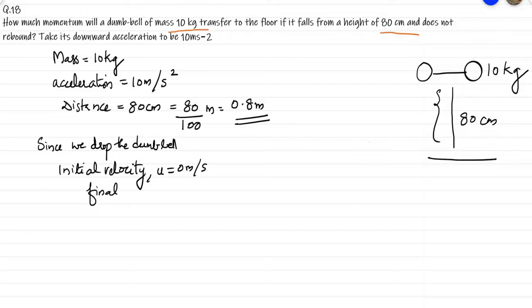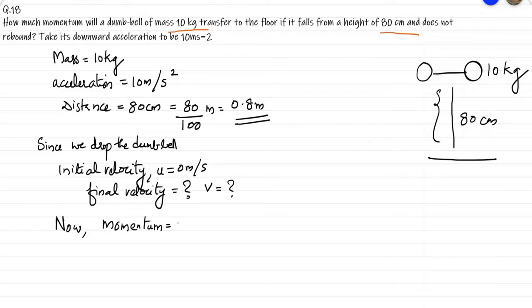And final velocity V is equal to question mark. Now, we know momentum is equal to mass into velocity, that is P equal to M into V. In order to find out the momentum, we need V, so we need to find out the final velocity.